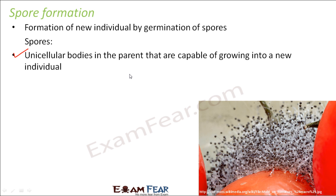Let us take the example of Rhizopus, which is a type of fungi. If you see something getting spoiled — for example, a rotten tomato as shown in the picture — you can see fungi which look like thread-like structures, and on top of these thread-like structures you see tiny blobs. These blobs contain spores — the special cells which can form new organisms. These spores are generally covered with thick walls during unfavorable conditions, but when they come in contact with a moist surface, the spores are released and begin to grow.